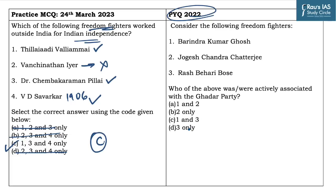The answer to the previous year question is D, which is 3 only, as it was Rash Behari Bose who was associated with the Ghadar Party and the other two personalities were not associated with the Ghadar Party. That's all for today's discussion. Thank you for watching today's DPP. Stay tuned for upcoming sessions which will enhance your UPSC prelims exam preparation and give you an idea regarding the themes and techniques with which you can solve MCQs in a real-time environment.